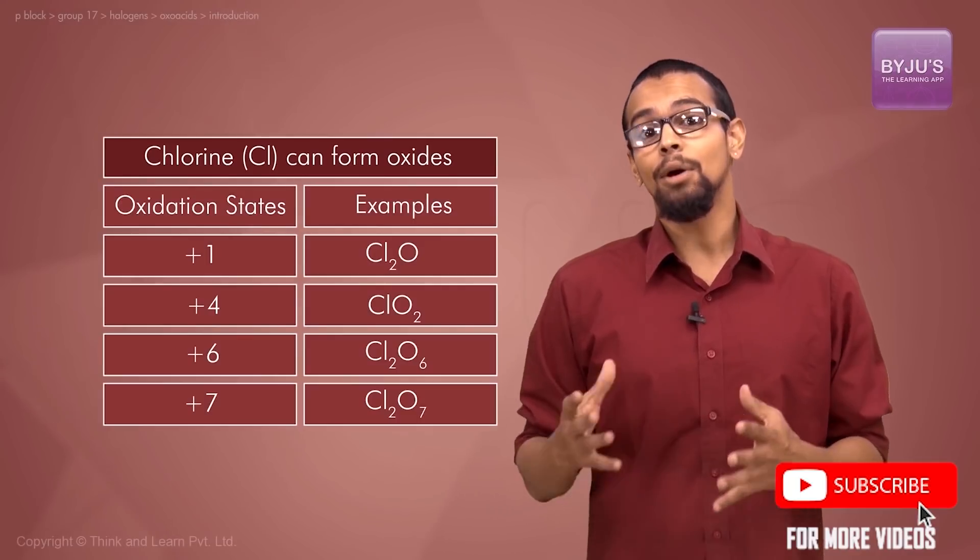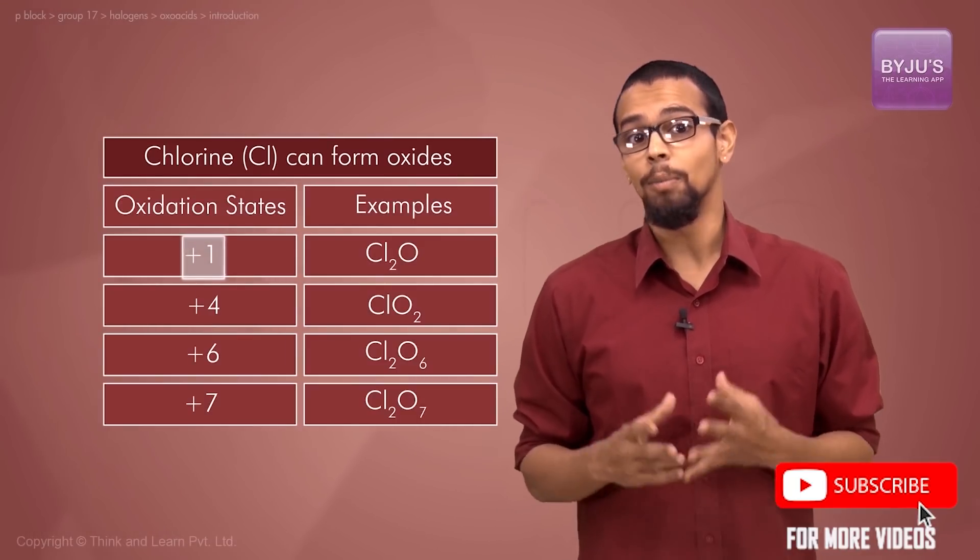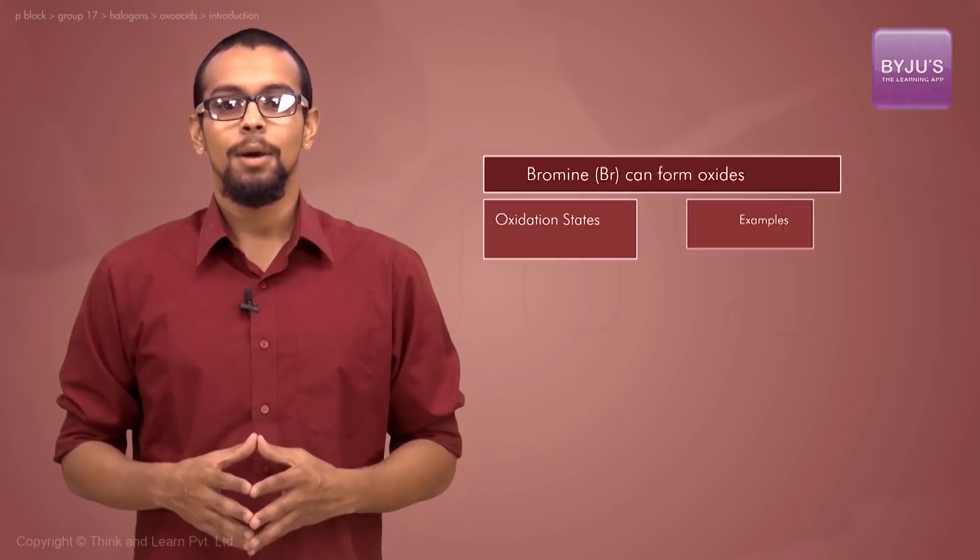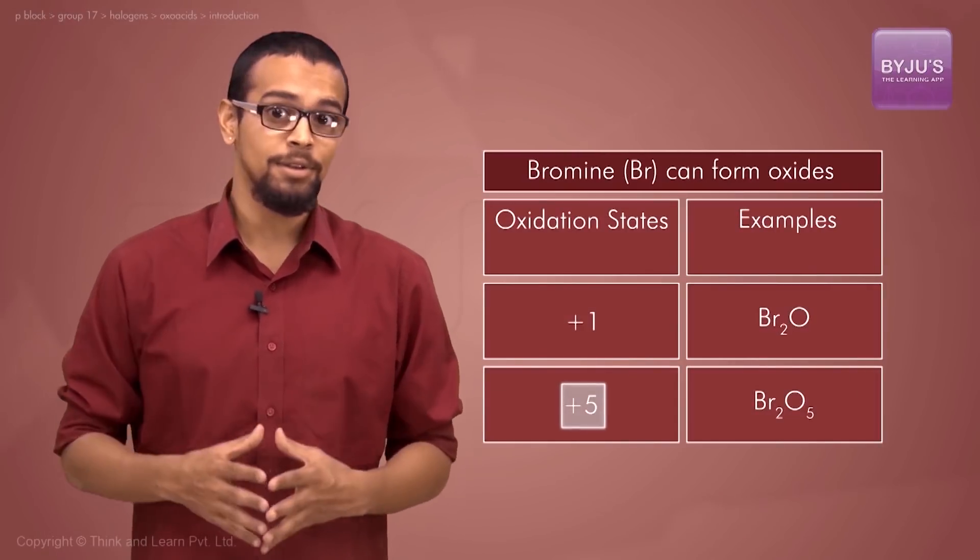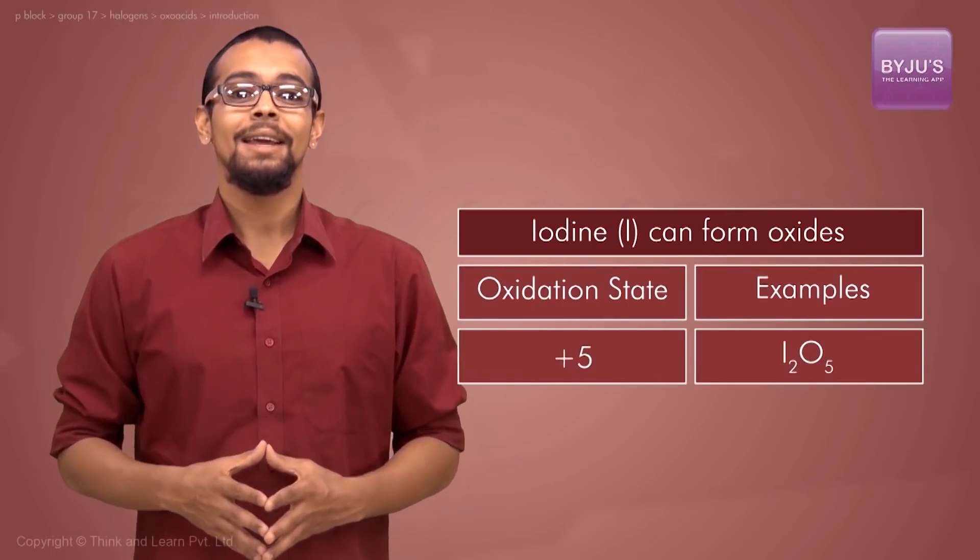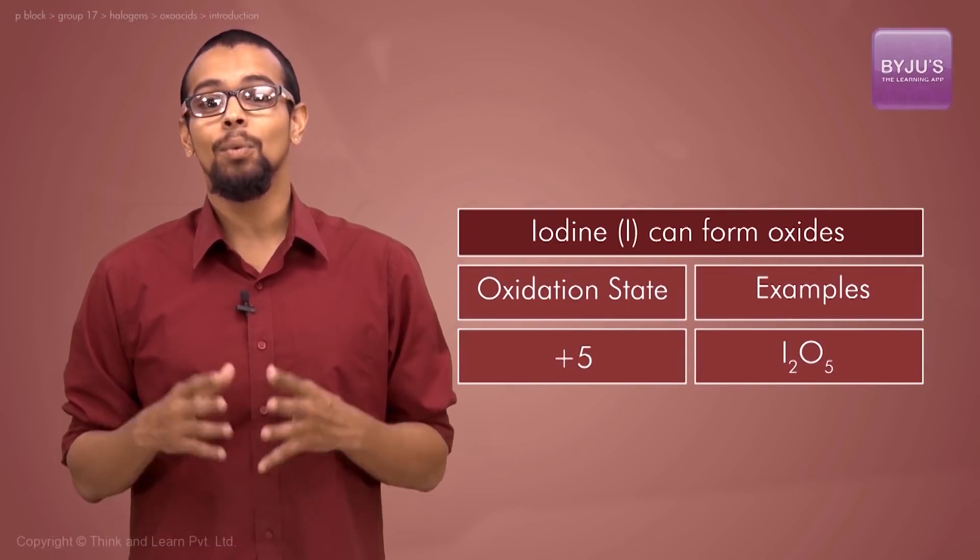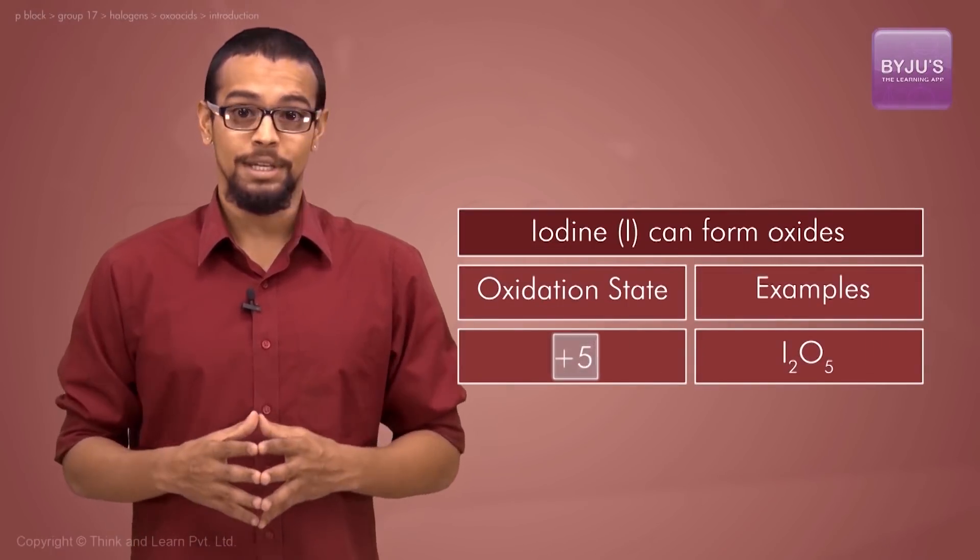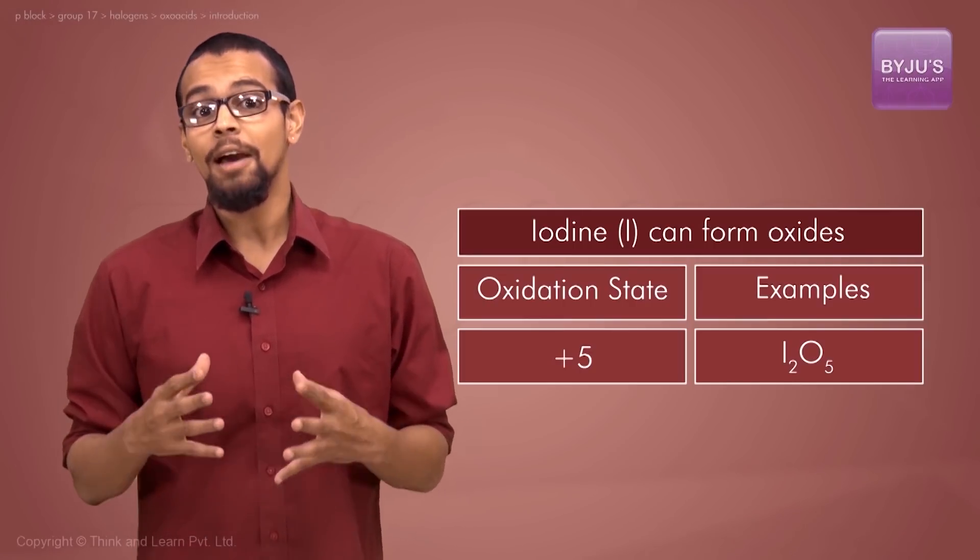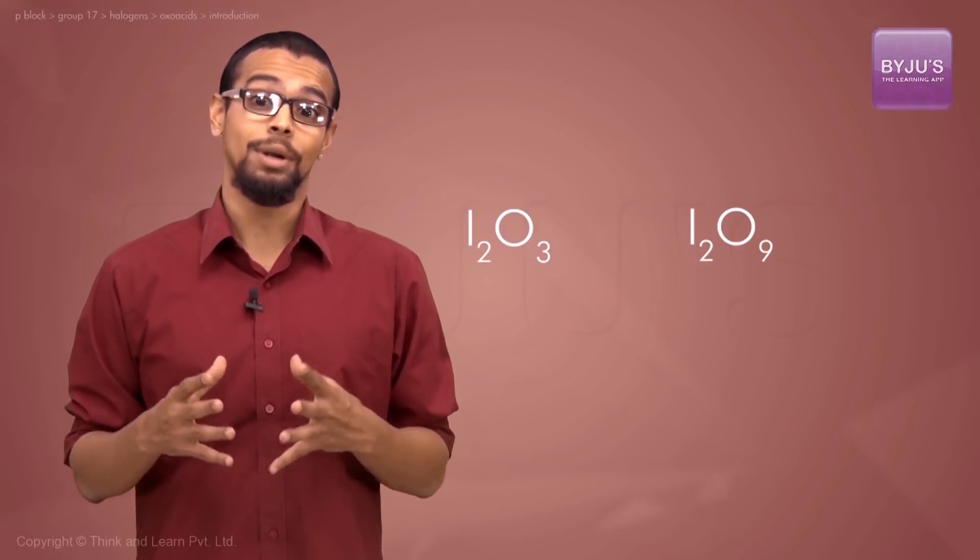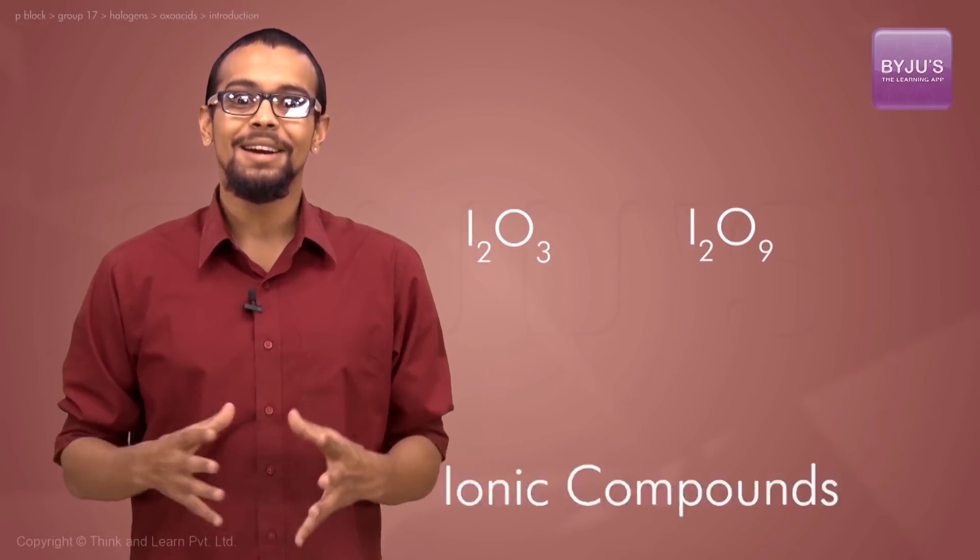Chlorine can form oxides where chlorine assumes oxidation states of +1, +4, +6, or +7. Bromine oxides assume oxidation states of +1 or +5. Iodine has an oxide where iodine is in its +5 oxidation state, I2O5, which is the only known true oxide of iodine. Other oxides like I2O3 or I2O9 are considered ionic compounds.